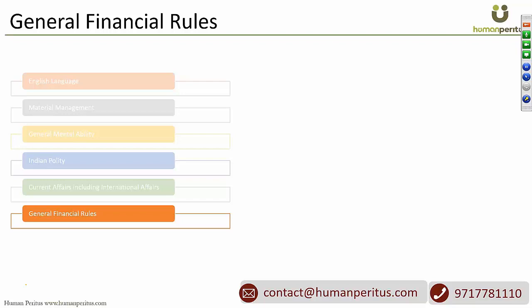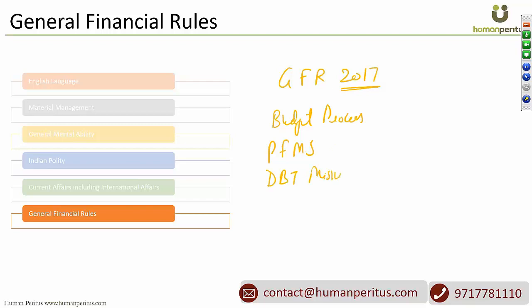The sixth topic is GFR — General Financial Rules — released by the Department of Expenditure under the Ministry of Finance in 2017. Beyond GFR itself, you need to understand the budget process in India, how the PFMS ecosystem works, what DBT mission is doing under the Cabinet Secretariat, and various government funds like the Contingency Fund and the Consolidated Fund of India. It is quite factual but a very important topic.